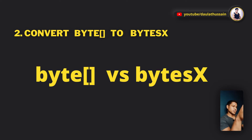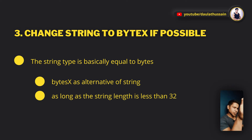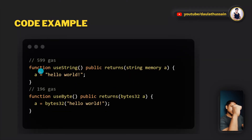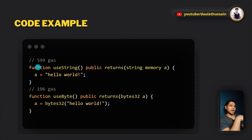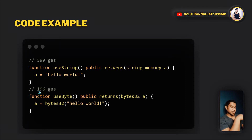Point number three: replace the string data type with bytesX. BytesX can be used as an alternative to string and is more efficient as long as the string length is less than 32 characters. In a demo with two functions — one using string and one using bytes32, both storing 'Hello World' — the string function costs 599 gas while bytes32 costs only 196 gas. Always try to replace string with bytesX when the string is under 32 characters.